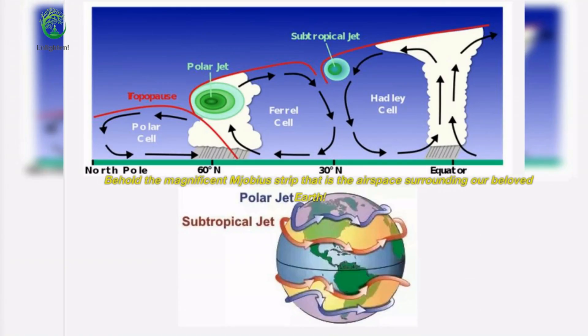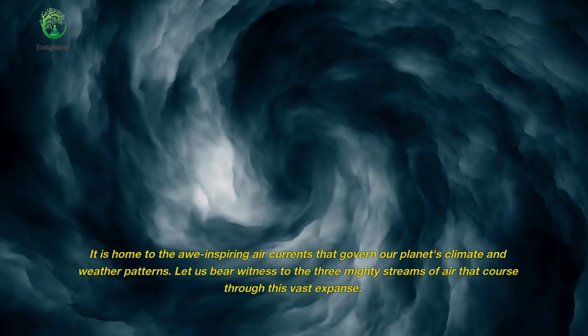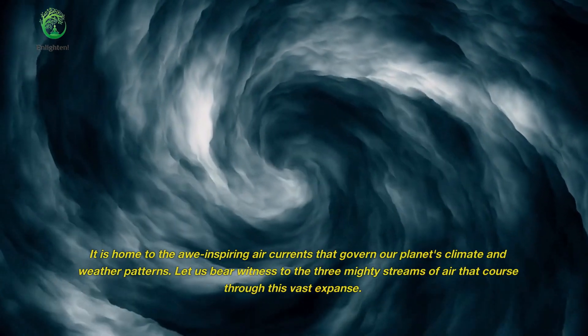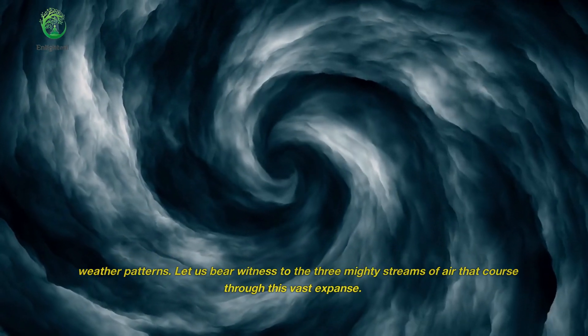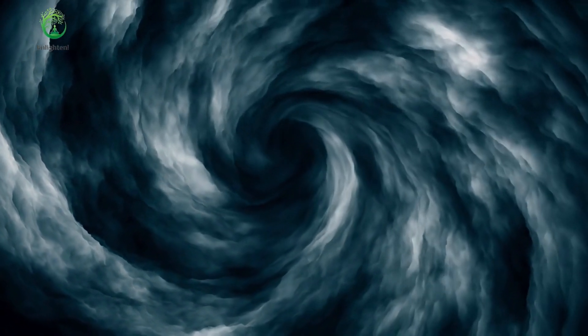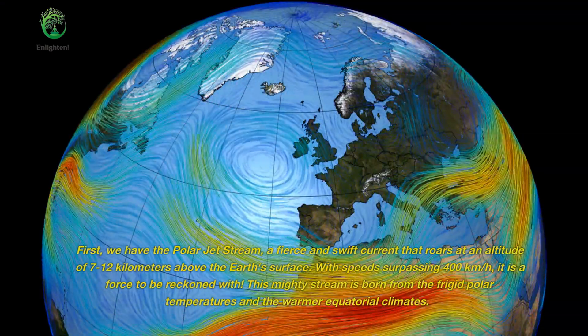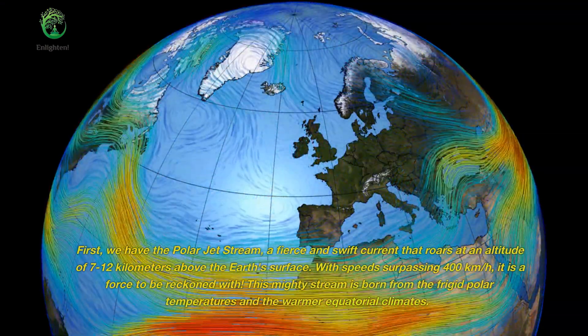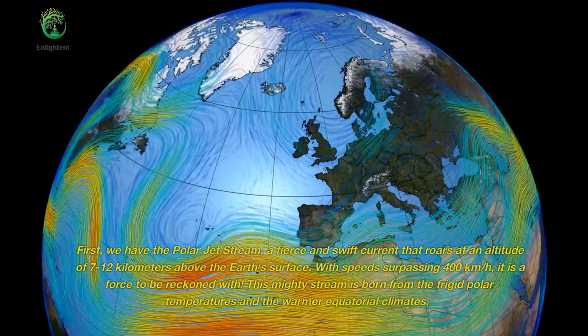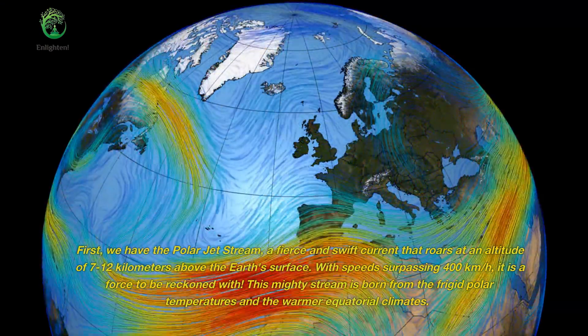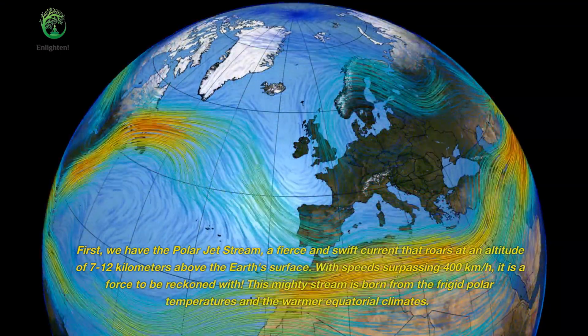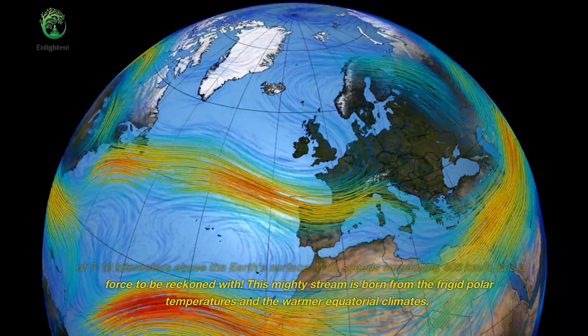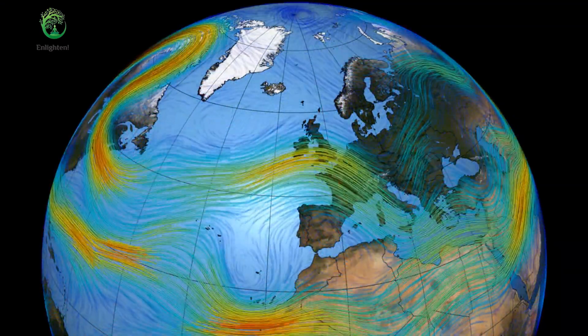Behold the magnificent Mobius strip that is the airspace surrounding our beloved Earth. It is home to the awe-inspiring air currents that govern our planet's climate and weather patterns. Let us bear witness to the three mighty streams of air that course through this vast expanse. First, we have the polar jet stream, a fierce and swift current that roars at an altitude of 7 to 12 kilometers above the Earth's surface. With speeds surpassing 400 kilometers per hour, it is a force to be reckoned with. This mighty stream is born from the frigid polar temperatures and the warmer equatorial climates.